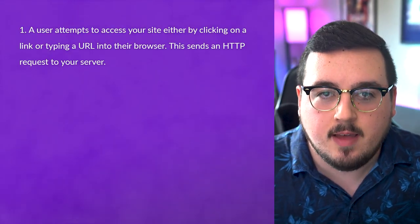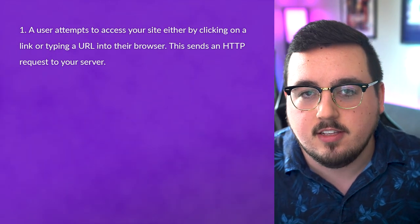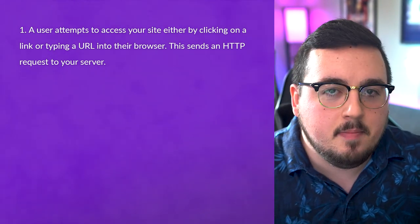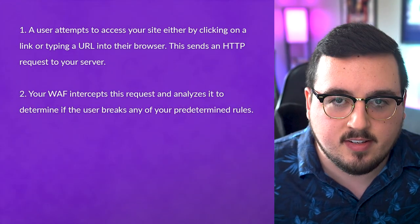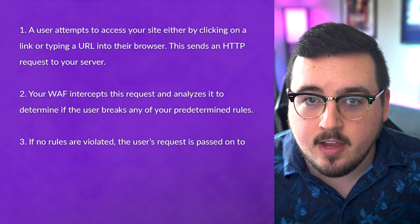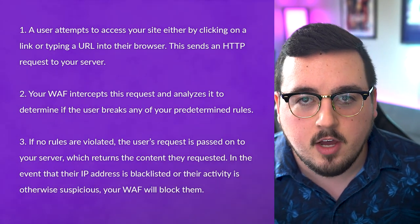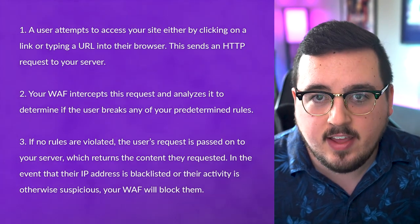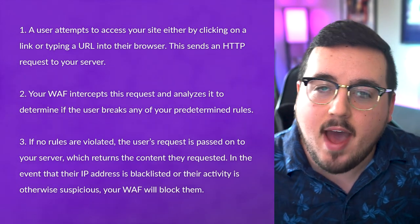To boil it down to the simplest possible terms, it works like so. Number one, a user attempts to access your site, either by clicking on a link or typing a URL into their browser. This sends an HTTP request to your server. Number two, your WAF intercepts this request and analyzes it to determine if the user breaks any of your predetermined rules. Number three, if no rules are violated, the user's request is passed on to your server, which returns the content they requested. In the event that their IP address is blacklisted or their activity is otherwise suspicious, your WAF will block them.